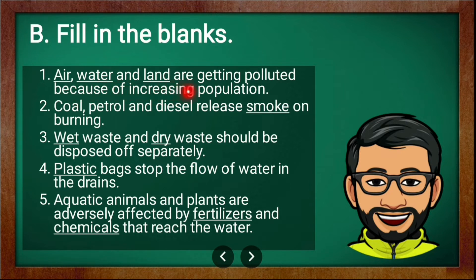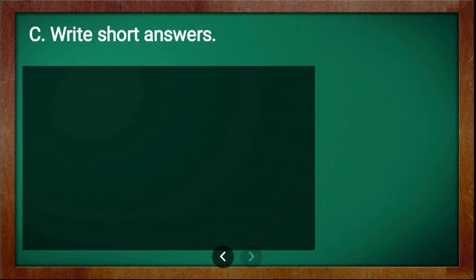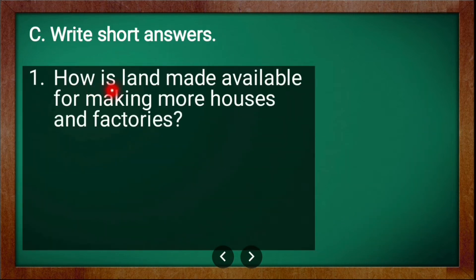Now the answers: first — air, water, and land are getting polluted because of increasing population. Second — coal, petrol, and diesel release smoke on burning. Third — wet waste and dry waste should be disposed of separately. Fourth — plastic bags stop the flow of water in the drains. Fifth — aquatic animals and plants are adversely affected by fertilizers and chemicals that reach the water.